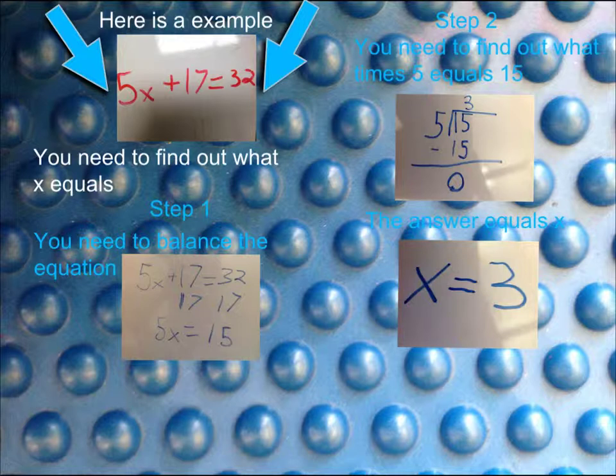So I divided 15 by 5. It equaled 3. The answer equals x, so that means x equals 3.